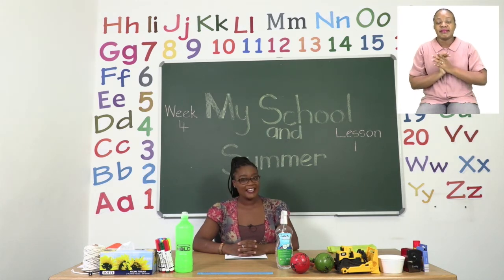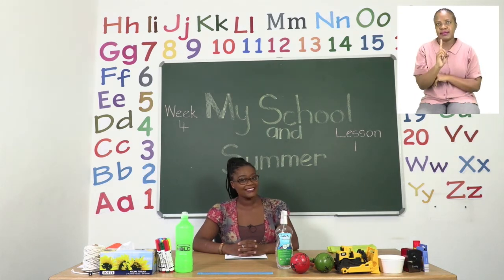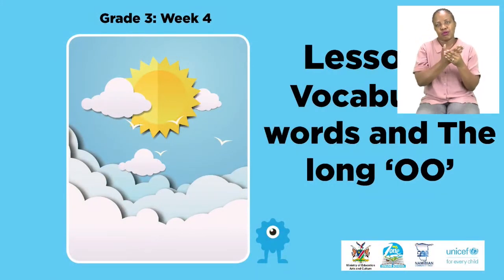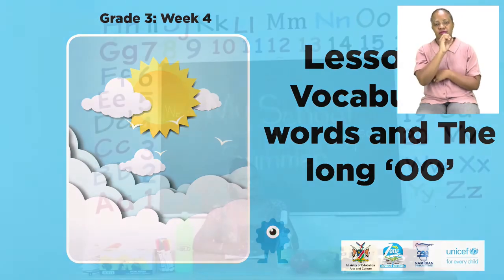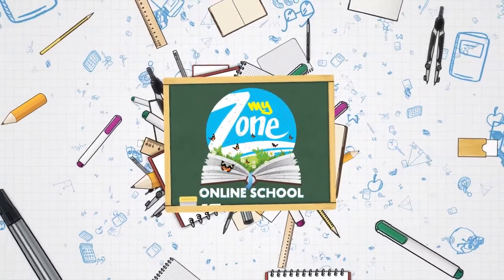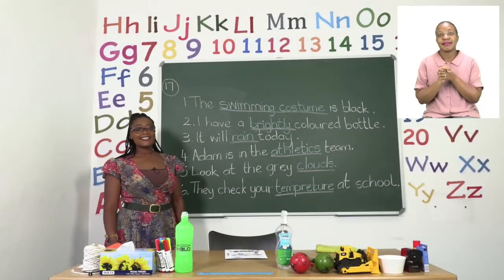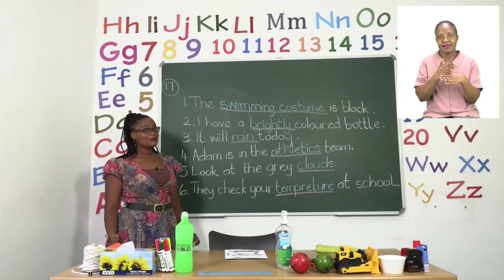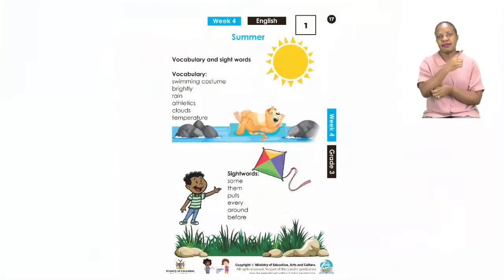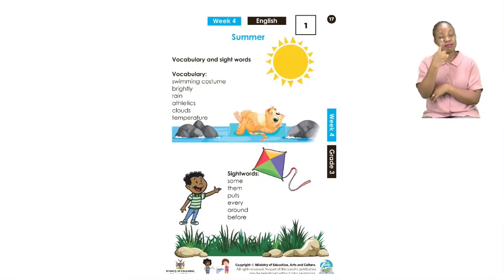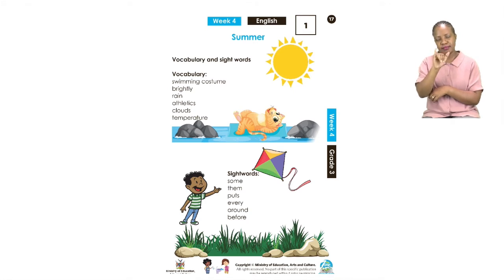Our lesson for today is all about vocabulary words and the long sound OO. Our first exercise today, grade 3s, please turn to page 17. On page 17 you can see that we have some new vocabulary words.